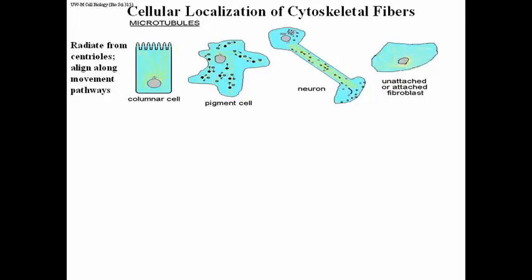In two out of the three cases, very clearly, the microtubules are radiating out from the centriole. They do so in the neuron as well, but in the neuron it's a special case where microtubules also lie parallel to the long axis of axons.